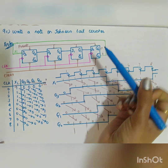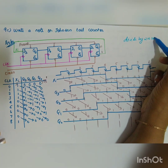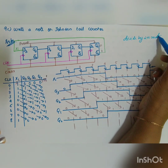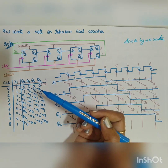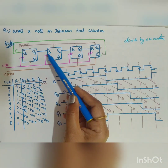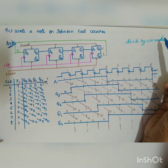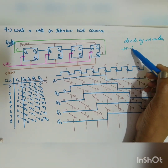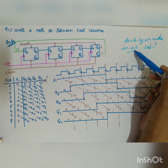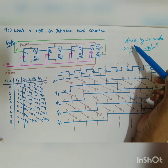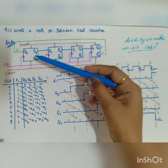It is also called the divide-by-2N counter. In this example, I have taken a 4-bit Johnson Tail Counter. The 4-bit Johnson Tail Counter counts 8 clock pulses — that's why it is called the divide-by-2N counter, meaning an N-bit counter will count 2N clock pulses, giving 2N distinct counts.